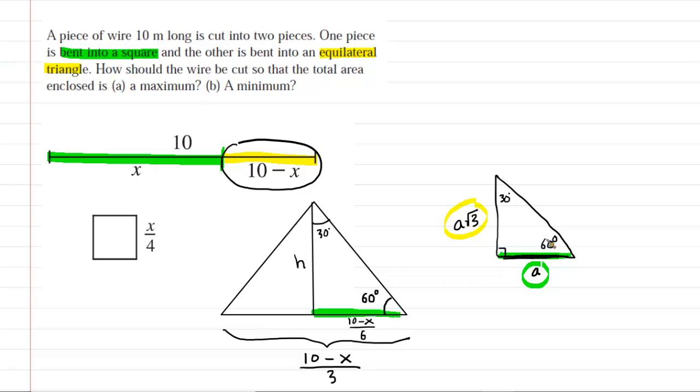And as we said, the side that's across from the 60-degree angle will just be A times radical 3. So this side right here, we can represent as 10 minus x over 6 times radical 3. So that's the value of H, and we're going to write that down accordingly. It's going to be 10 minus x over 6, that quantity multiplied by the square root of 3. So that's the height of our equilateral triangle.